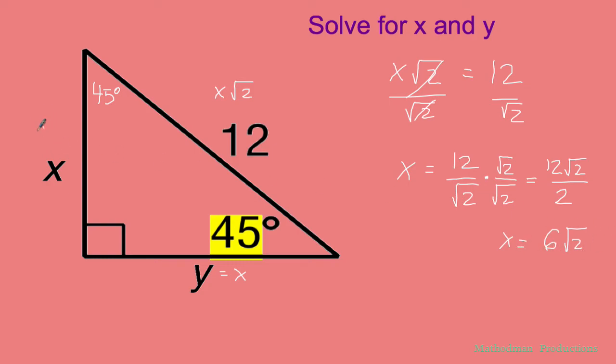So now I know this length: 6√2, and that's just equivalent to the other length, the one across the other 45: 6√2. If you want a decimal answer, it's 8.49.